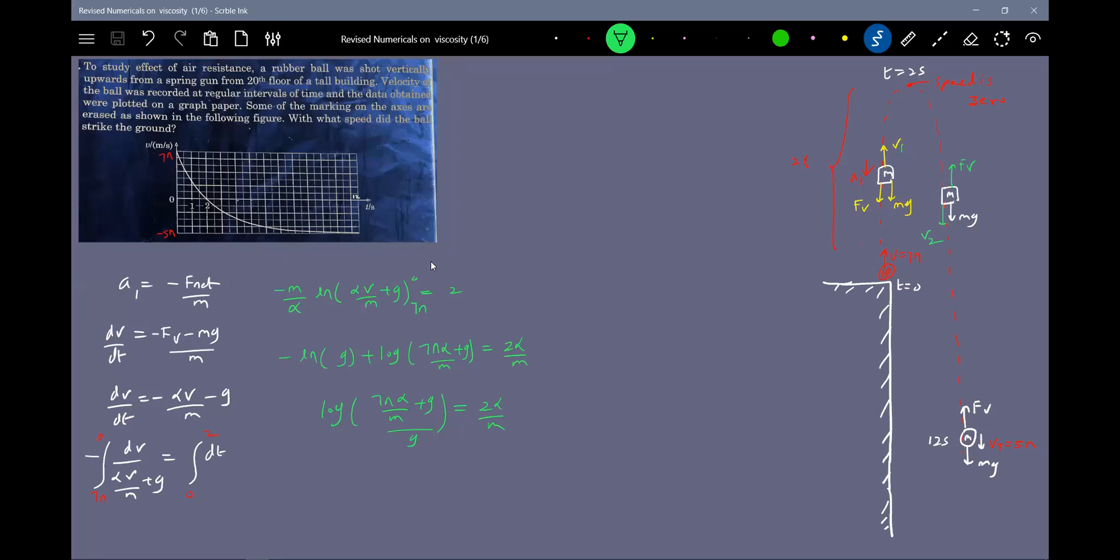There's no information about n. What to do now? This is something very important: when the ball finally attains terminal velocity, the condition is F equals mg, and F equals αvt. The terminal velocity is 5n. Can you replace this? So α/m equals g/(5n). Very important, very good idea. Otherwise we'll get stuck here and won't know what to do after this.